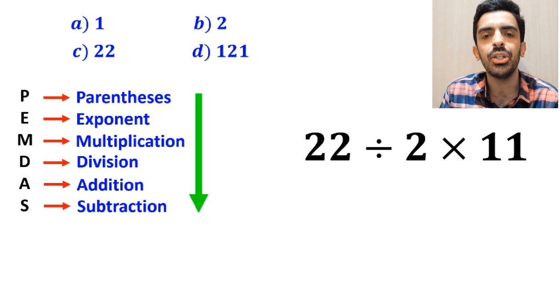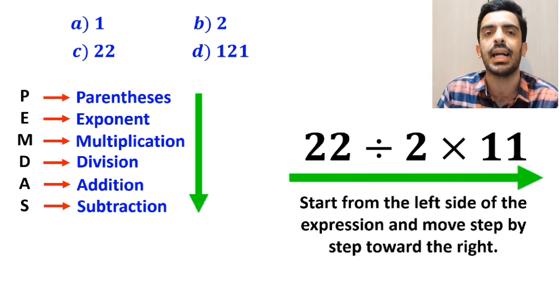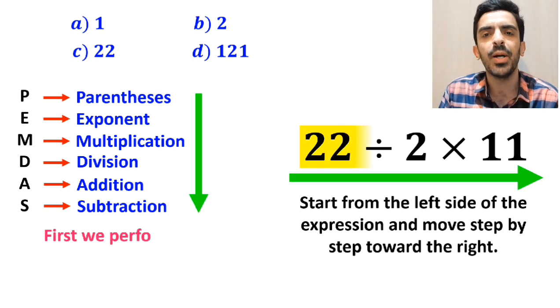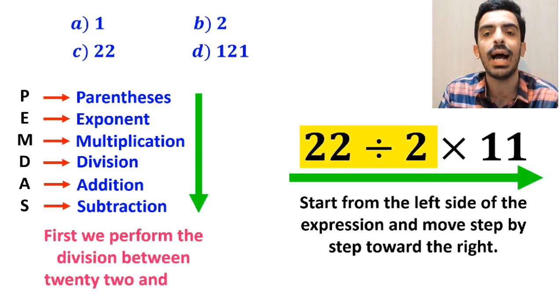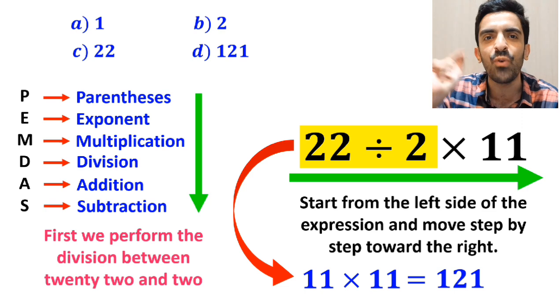In this case, all we need to do is to start from the left side of the expression and move step by step toward the right. So first we perform the division between 22 and 2, which simplifies this expression to 11 multiplied by 11. Finally, the value of this expression will be 121.